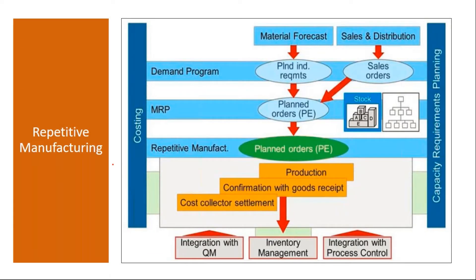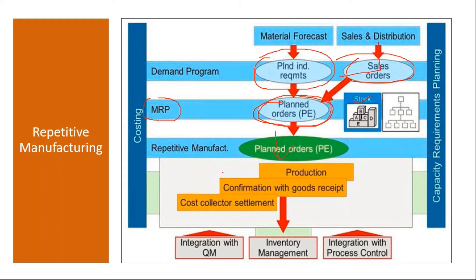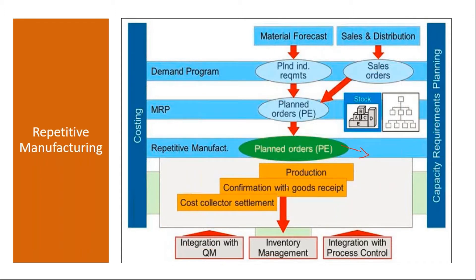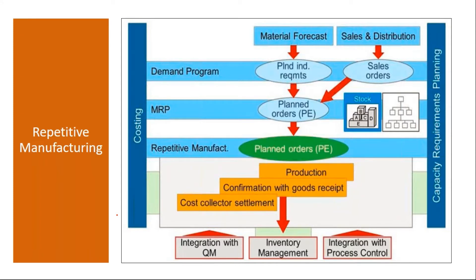This is the basic flow. They enter the demand as per their requirement. From the sales module, they receive sales orders and customer orders, enter them into the system, and then run MRP. When MRP runs, the system will generate planned orders if there is no stock. Using these planned orders, production is executed. There is no production order or process order here — only planned orders. You cannot convert the planned order to a production order. With the planned orders themselves, they will do the manufacturing execution. That is a major difference.